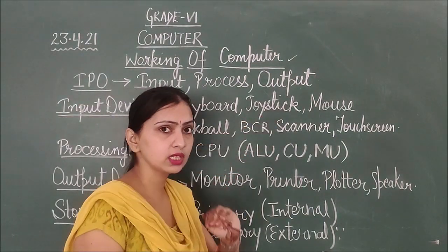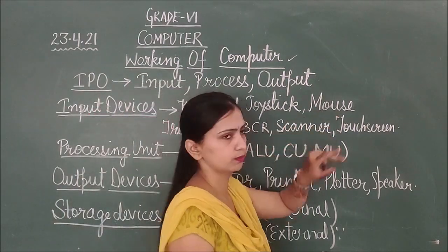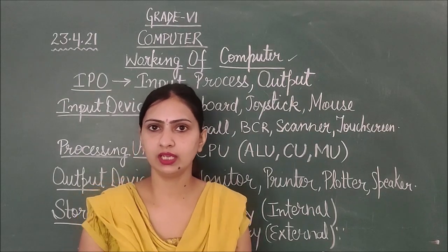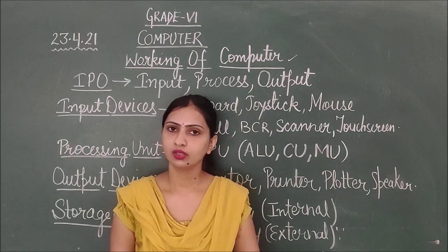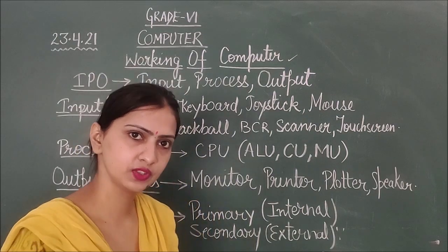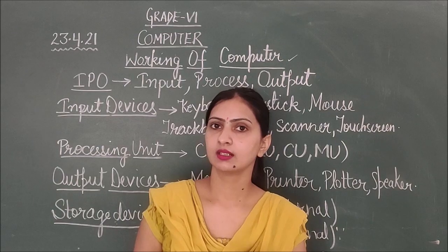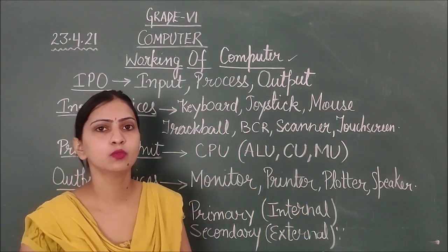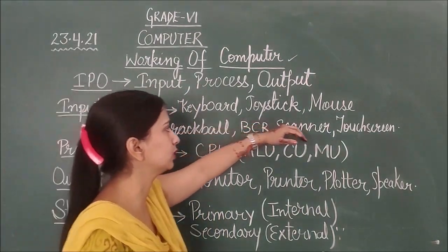Next is joystick. Joystick is used for playing video games. Next is mouse. Mouse is the pointing device. What are the buttons? Two or three buttons: left button, right button and scroll bar. Left is used to select an item, to open an item we press right click, and scroll bar is used for zoom up and down.